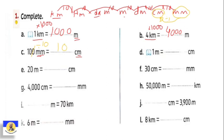Another one: one meter — how many centimeters? Meter is here and centimeter is there. We go two steps from meter to centimeter, going from greatest to smallest, so we multiply by one hundred. Why one hundred? Because there are two steps: ten times ten equals one hundred. So one meter equals one hundred centimeters.